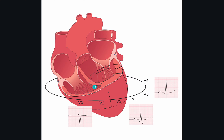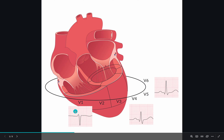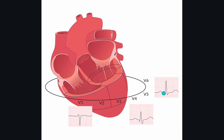This is important knowledge to understand why a left bundle branch block looks the way it does. The first thing is septal depolarization towards V1 and away from V6. As a result, the first deflection in the QRS complex is positive in V1 — this is a septal R-wave — whereas the first deflection in V6 is negative, and this is a septal Q-wave, which is all normal physiology.